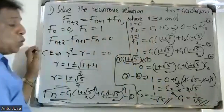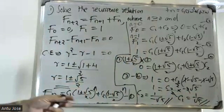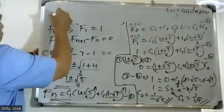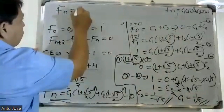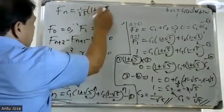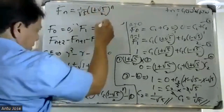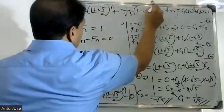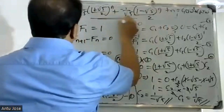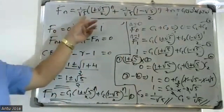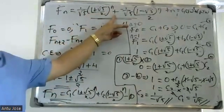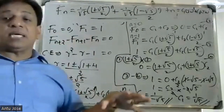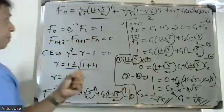With C1 and C2 found, the final solution is: f(n) equals one by root five into one plus root five by two, all raised to n, minus one by root five into one minus root five by two, all raised to n. This is the complete solution.